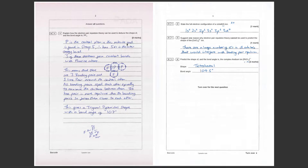Question one opens with a large six-mark question: explain how the electron pair repulsion theory, VSEPR, can be used to deduce the shape of and the bond angle in PF3. There's a lot going on here — you need to use VSEPR to deduce both the shape and the bond angle, and of course explain that.